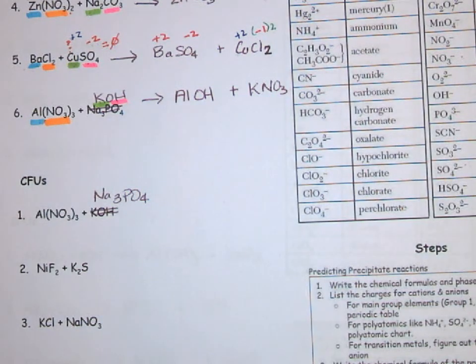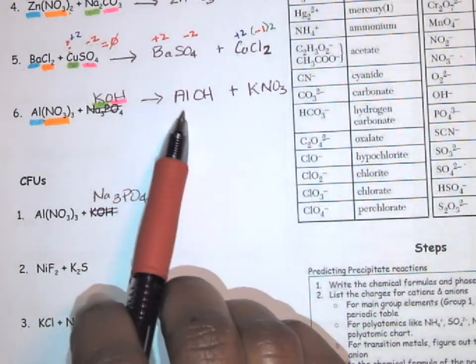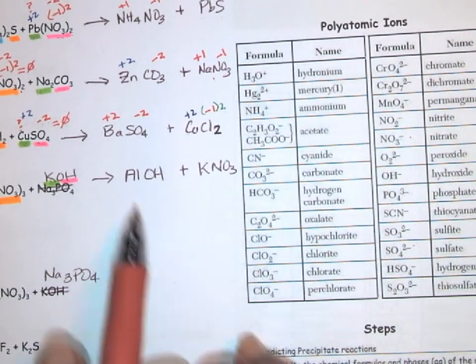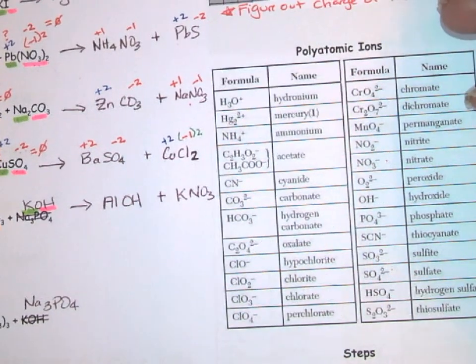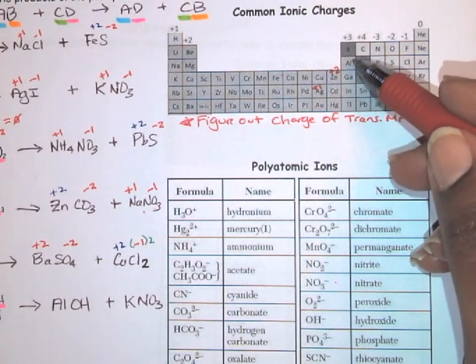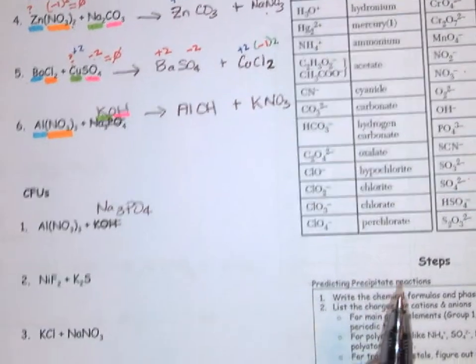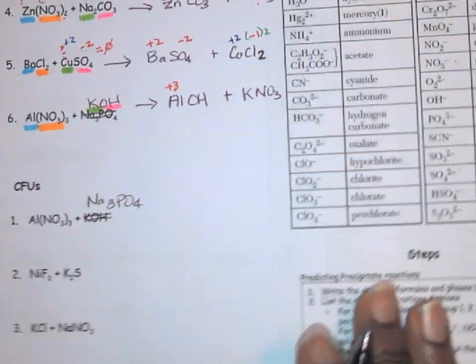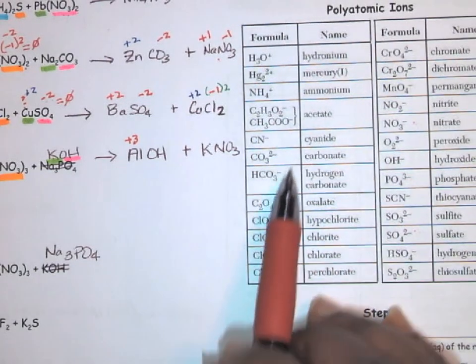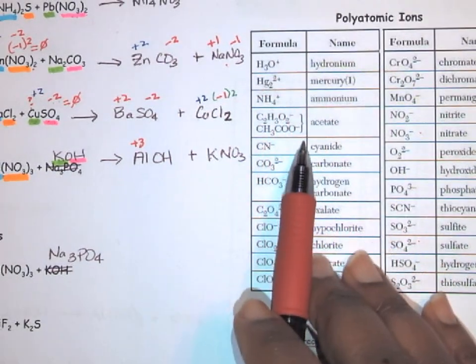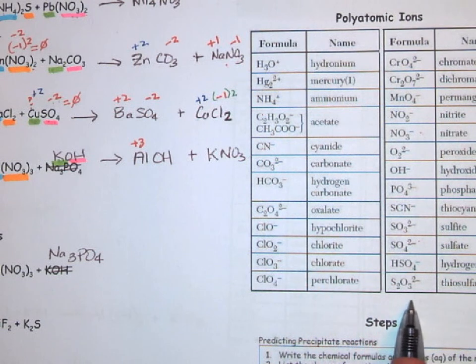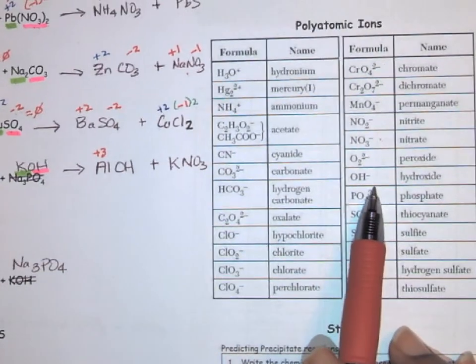So now what I need to do is figure out if these are the correct formulas after I form my product. Aluminum has a common charge of plus three. I know that because it's in group 13, so aluminum is plus three. And hydroxide is a polyatomic so I got to look in the chart here. See if I can find it. There you go. Hydroxide has a minus one charge.